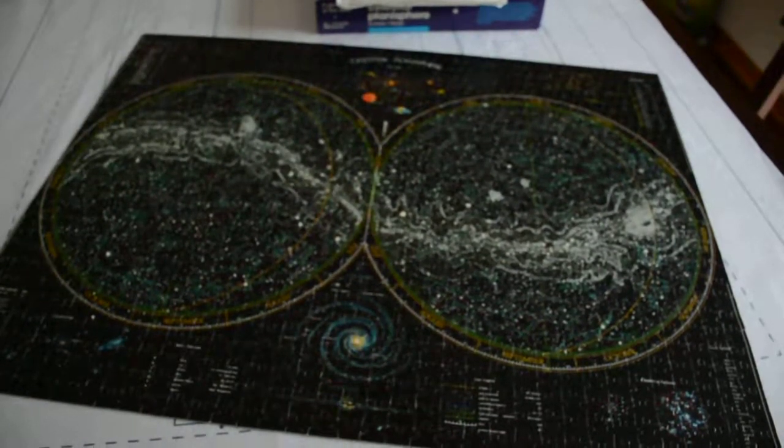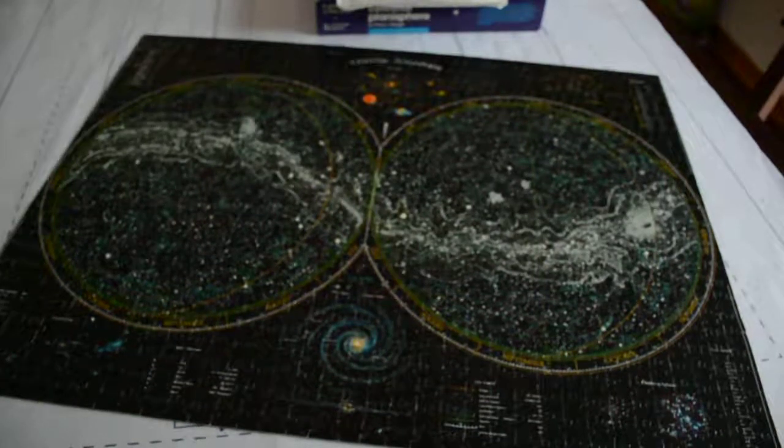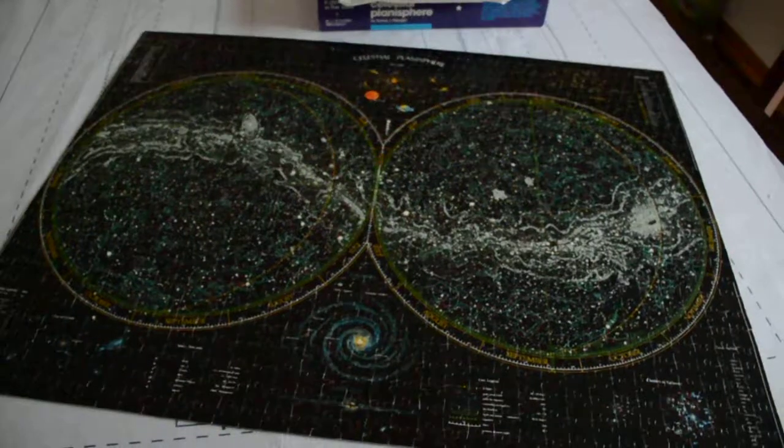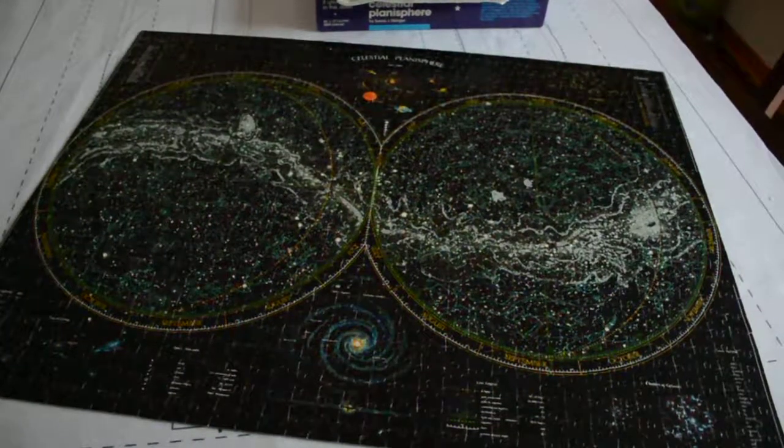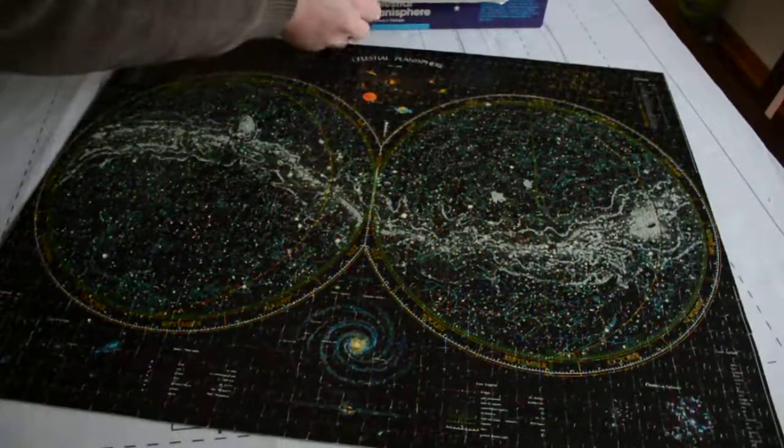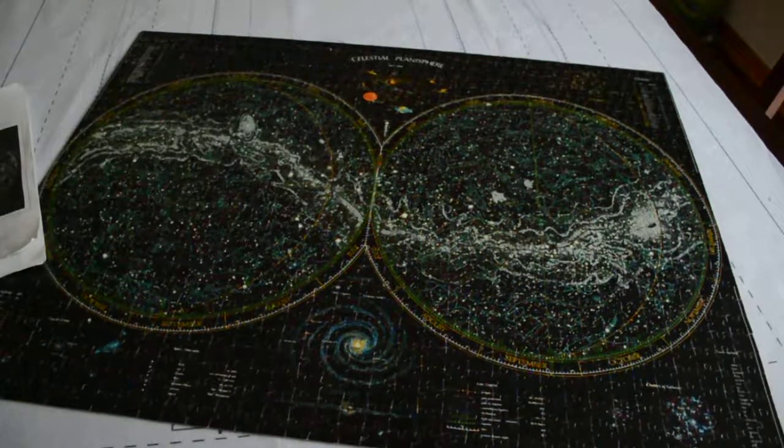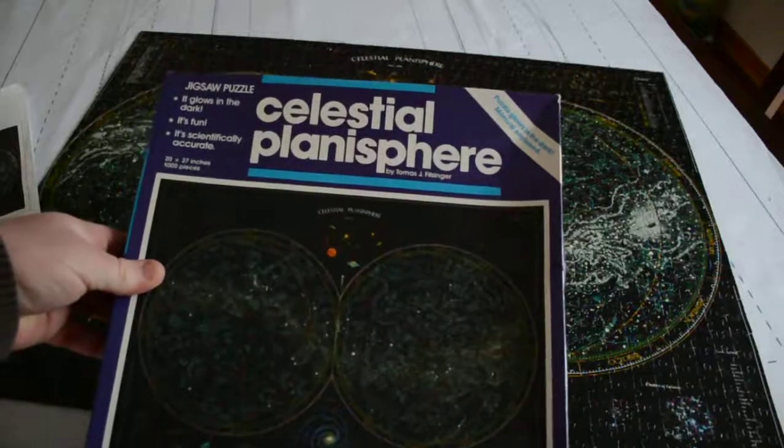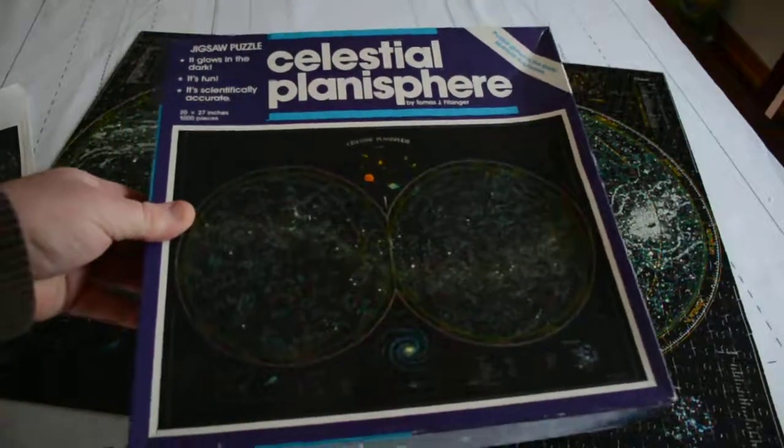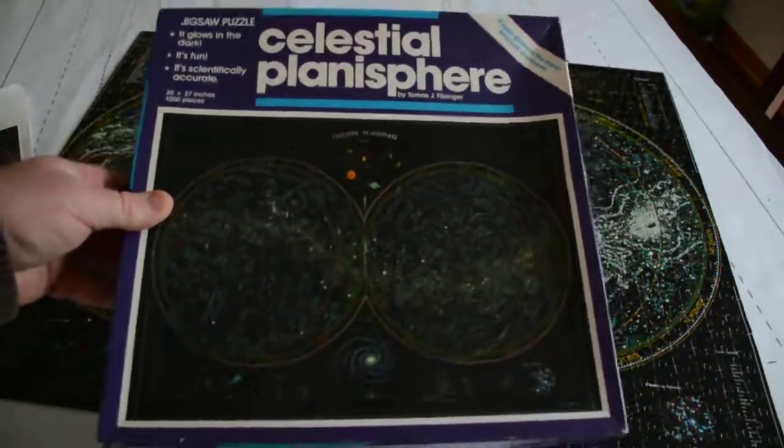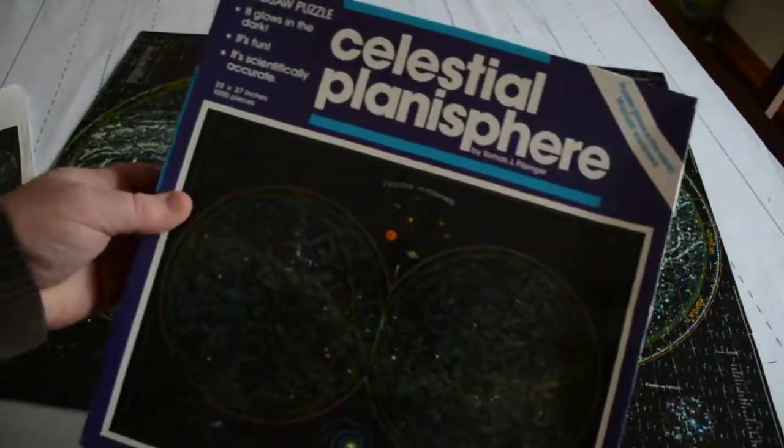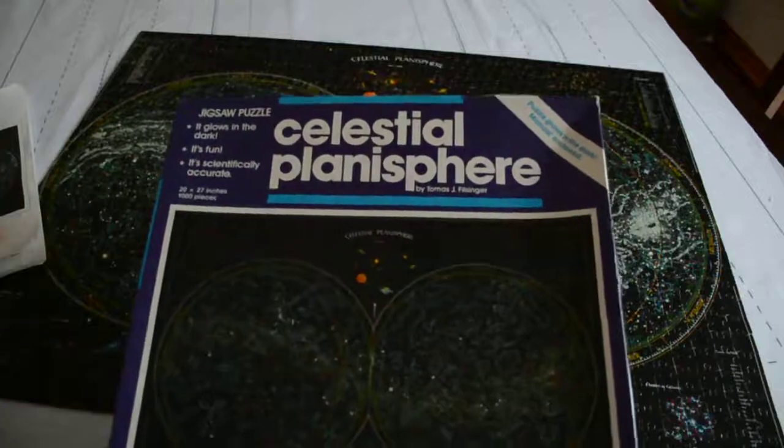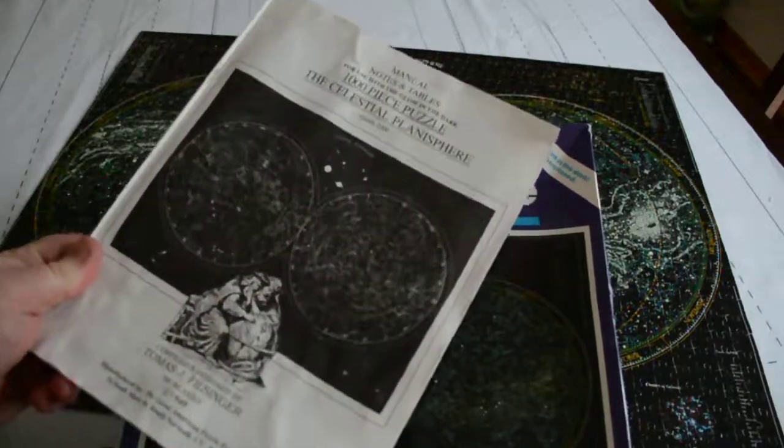Over the holidays I bought this puzzle, a 1000-piece celestial planisphere. This is the box it comes in, and it's from 1989, which is surprising that I could find it brand new. I bought it online and it's still all wrapped up. It had its brand new wrap and the manual that came with was all brand new and untouched.